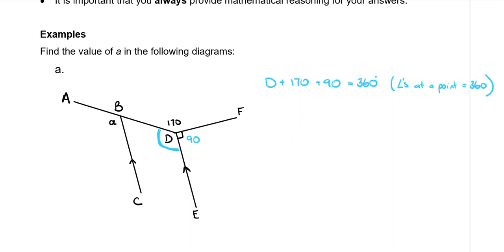To solve that equation, I need to add together the 170 and the 90. So, that's D plus 260 is equal to 360.